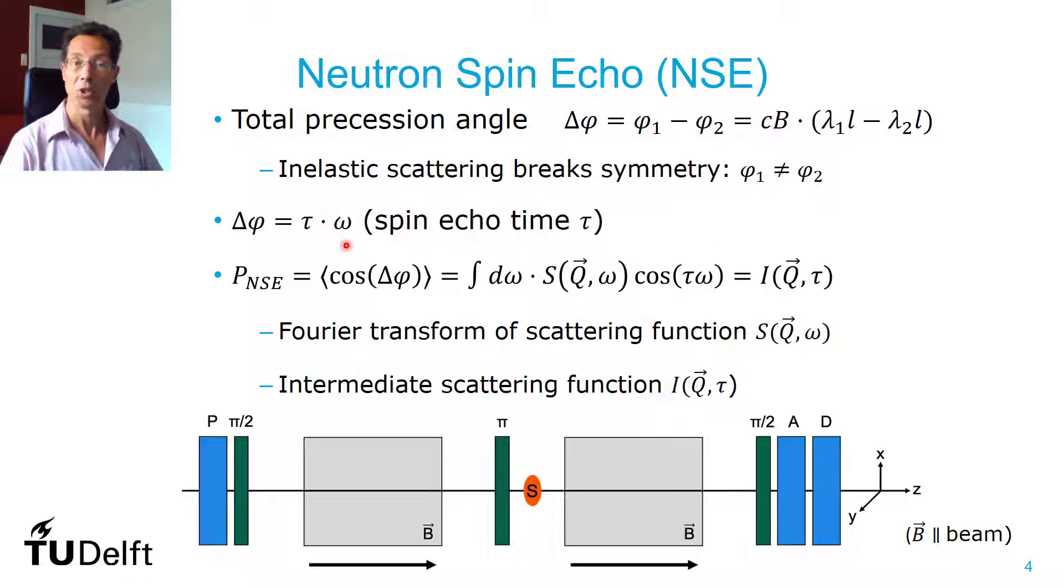In the end you don't measure a single precession, but you measure the spin echo amplitude, the polarization. And that's the average cosine of this precession angle. And that's nothing else than a Fourier transform of your scattering function, which is the intermediate scattering function, only depending on time.